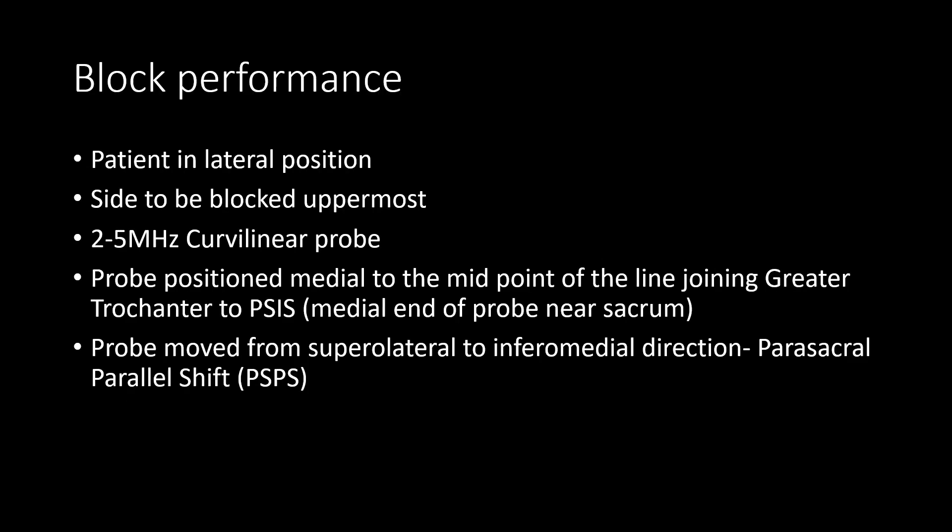To perform the block, the patient is placed in the lateral position with the side to be blocked uppermost. A curvilinear 2 to 5 MHz probe is placed medial to the midpoint of the line joining the posterior superior iliac spine and the greater trochanter. The probe is moved from a superolateral to an inferomedial direction — the parasacral parallel shift.